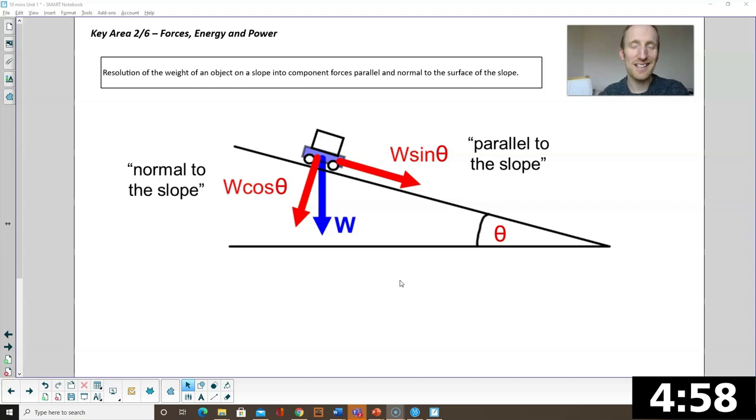Another situation where you need to resolve is for an object on a slope. To find the component of the weight acting down the slope, we call that parallel to the slope. It's w sin theta or of course you can write that m g sin theta because w equals m g. And then the component of the weight acting into the slope, we call that normal to the slope, is w cos theta. You need to remember both of those.